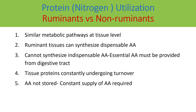Tissue protein is constantly undergoing turnover in both ruminant and non-ruminant animals — there is constant protein catabolism and synthesis. Amino acids are not stored, so a constant supply is required. If amino acids are in excess of body requirements, they are oxidized, or if protein is synthesized, it is deposited in the tissue. Amino acids must be made available through catabolism or through the diet.